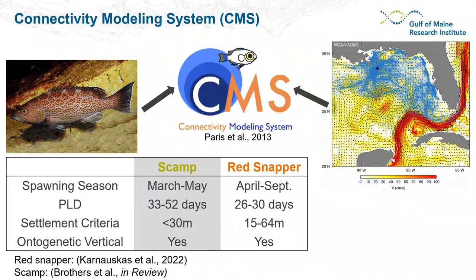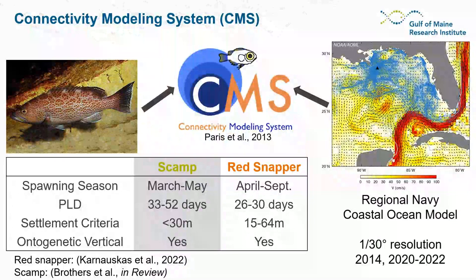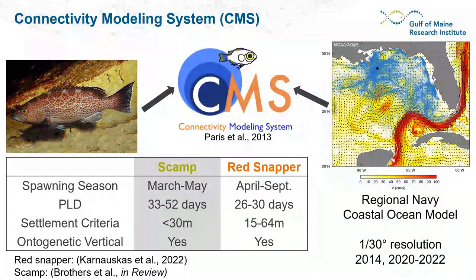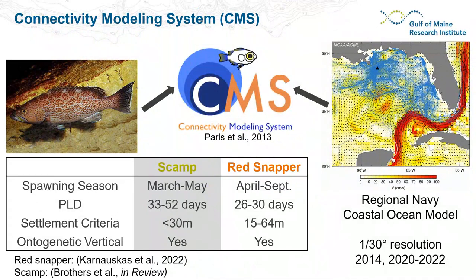The oceanographic model CMS uses is the Regional Navy Coastal Ocean Model, which has one-thirtieth of a degree horizontal resolution and covers the eastern Gulf of Mexico and waters off the southeast United States. We're using four different years of ocean output: 2014 and 2020 through 2022. We're not trying to estimate where larvae end up in specific years, but rather a general probabilistic distribution of dispersal dynamics, so all results are averaged over all four simulation years.